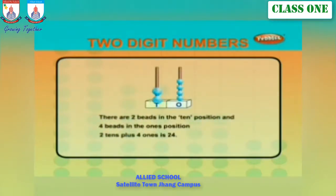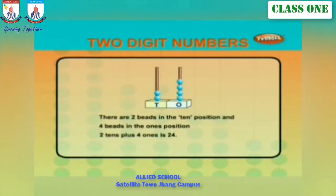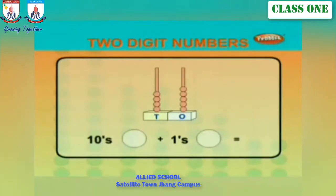There are two beads in the tens position and four beads in the ones position. Two tens plus four ones equals twenty four.